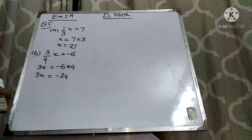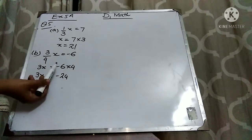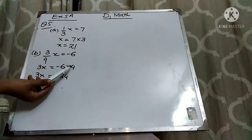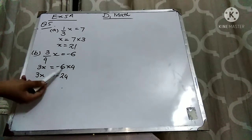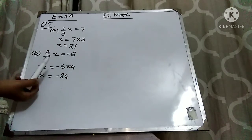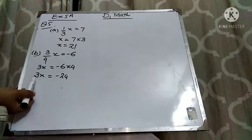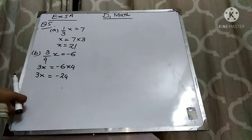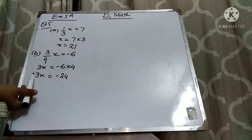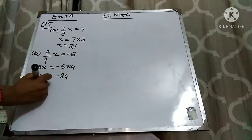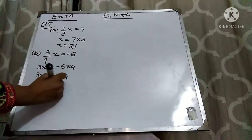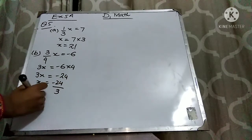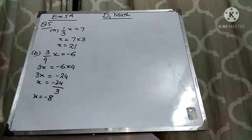Whenever you do the multiplication, first multiply the signs. Here with this 4 there is no sign, meaning the sign is plus. So plus times minus is minus. 6 times 4 is 24. Now since this 3 is multiplying with x, apply the rule of the equation: if something is multiplying on one side and goes to the other side, it will divide. So divide 24 by 3; 3 times 8 is 24. So minus 8 is your answer.